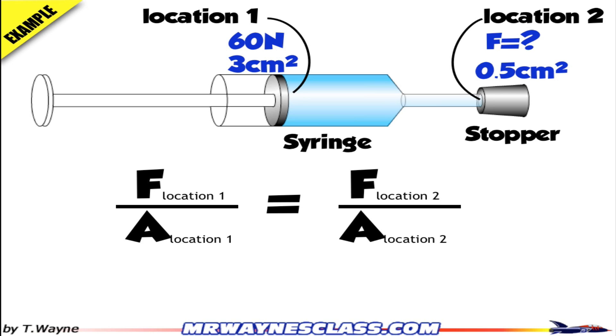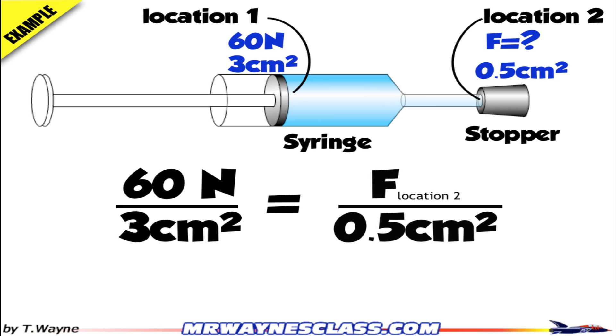Now I'll substitute the numbers for location 1: 60 newtons over 3 centimeters squared equals force at location 2 divided by 0.5 centimeters squared. Cross multiply, and I get the answer of 10 newtons.